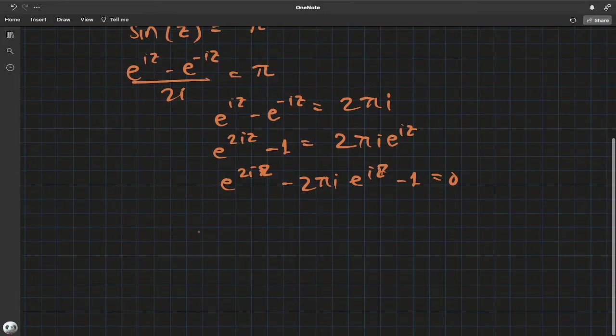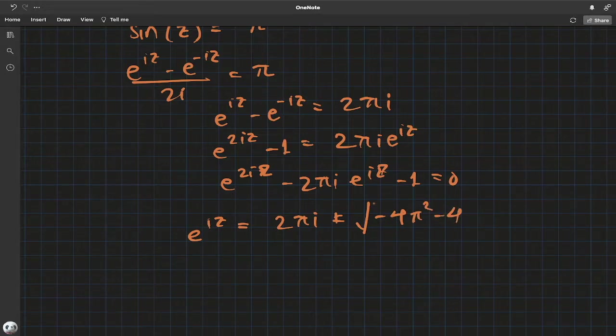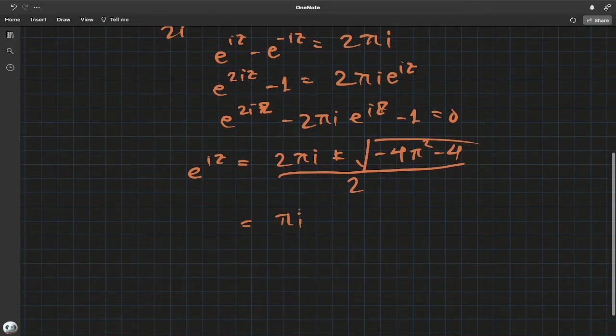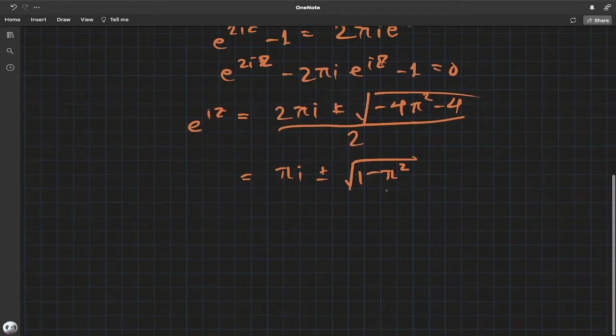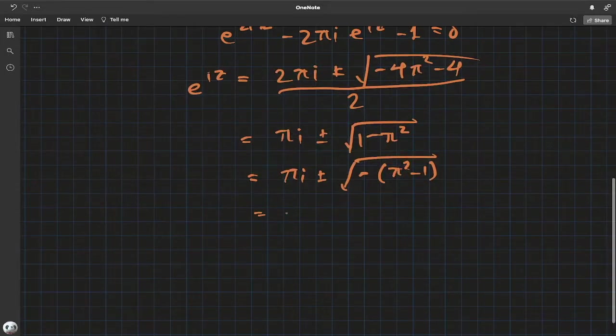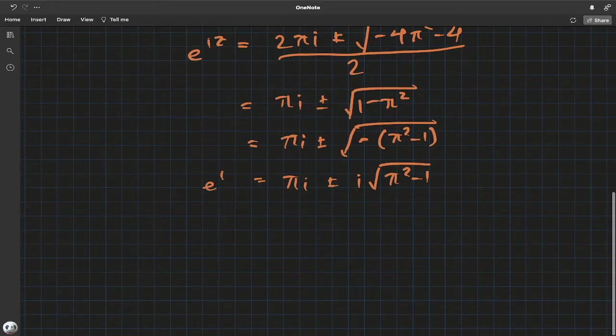So the solution using the quadratic formula is just 2πi plus or minus square root of -4π² - 4 divided by 2. Just reduce a few terms, divide by 2, you get πi plus or minus square root of 1 - π². Notice π² is around 9, which is always greater than 1, so we want to flip this negative inside. When you separate the negative 1 from the square root, we have i times square root of π² - 1. This is e^(iz).